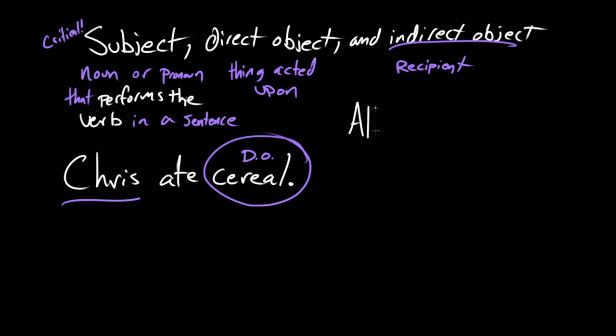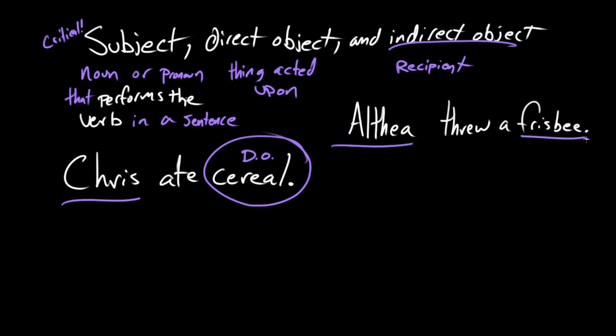All right, so we have this sentence, straightforward: "Althea threw a frisbee." So we've got the subject here and we've got the direct object here. Who's doing the throwing? Althea. What did she throw? A frisbee.